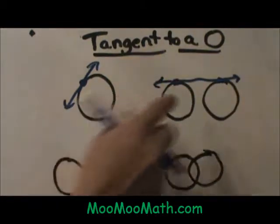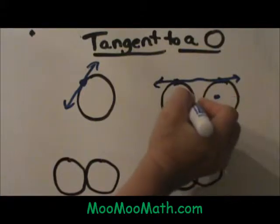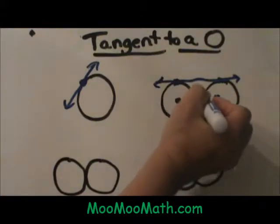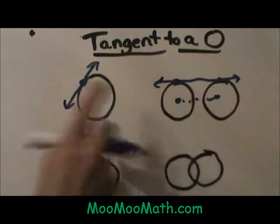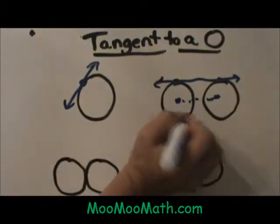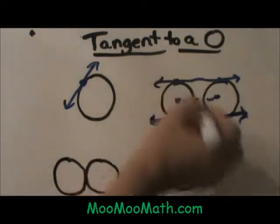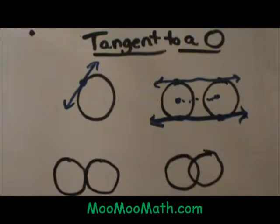That is called an external tangent because it does not cross between, if you think of these as two little eyeballs, the line that would connect the center of the two circles. That is an external tangent. I can draw a second external tangent down here. This one has two external tangents.